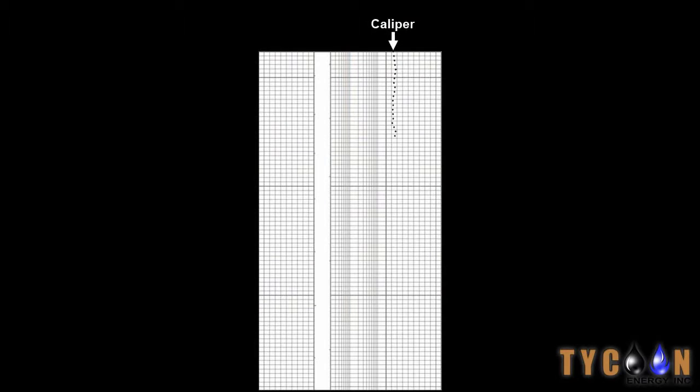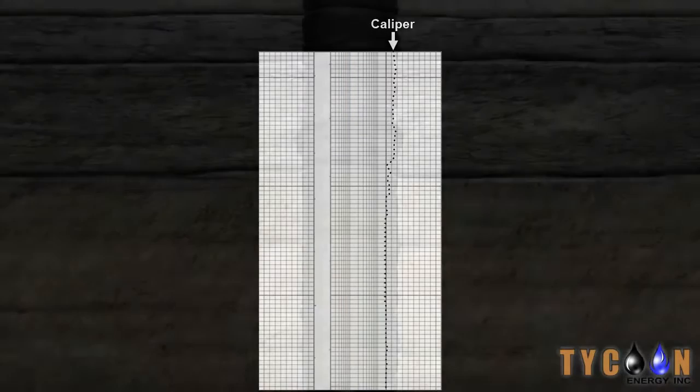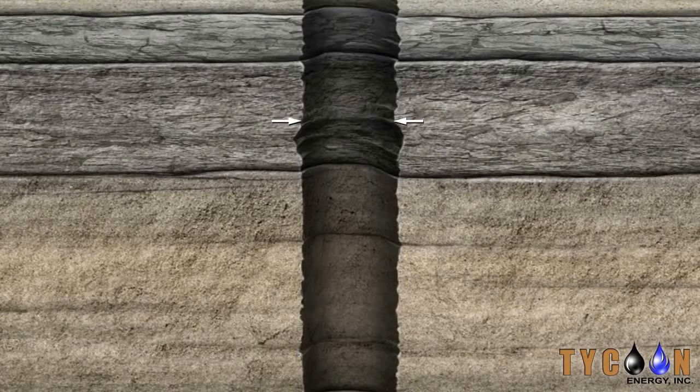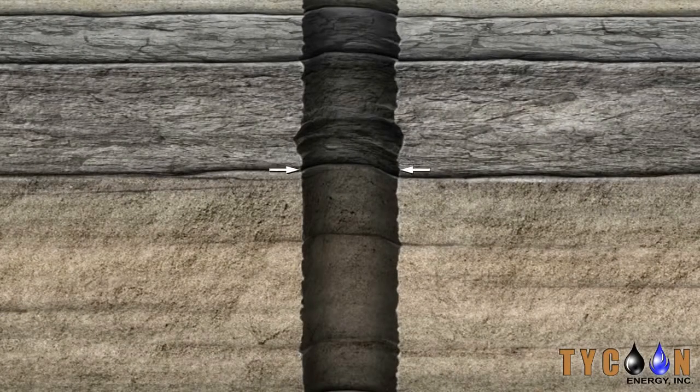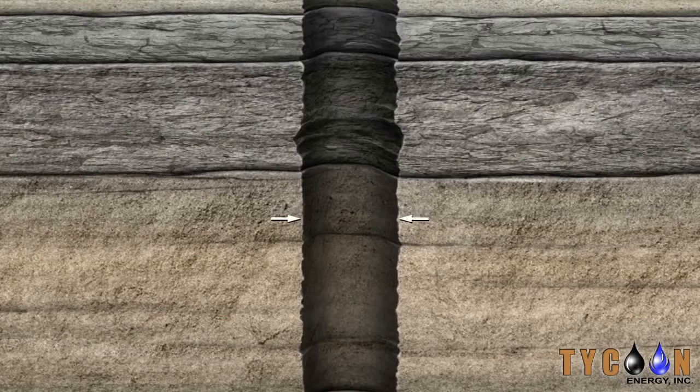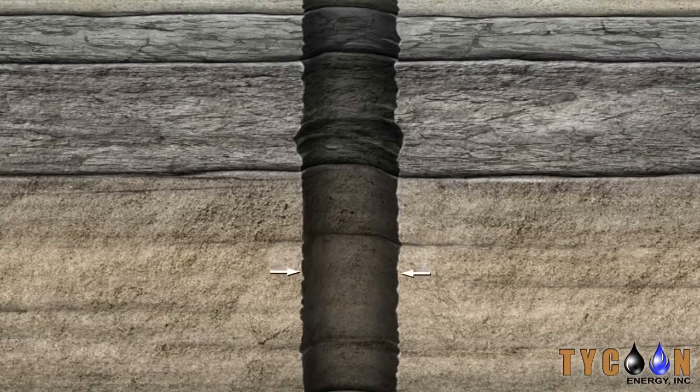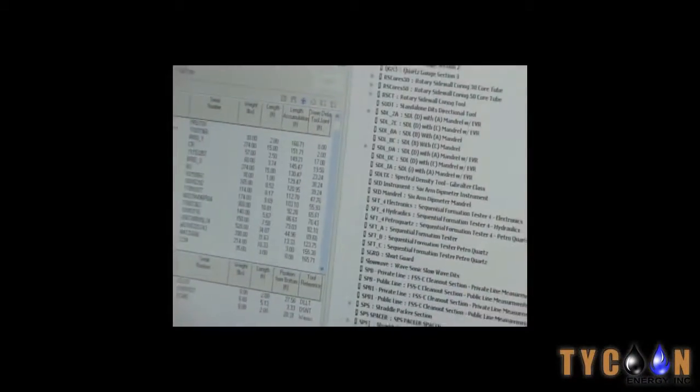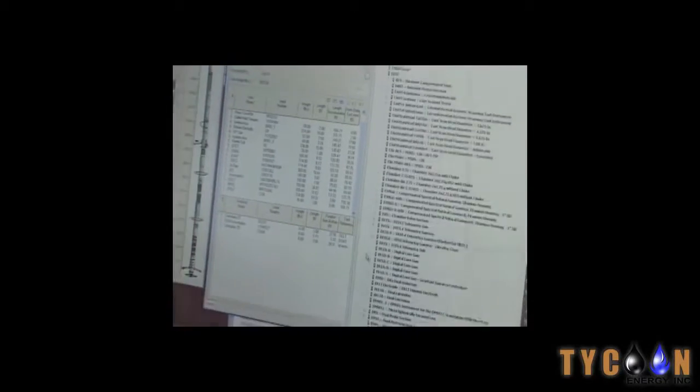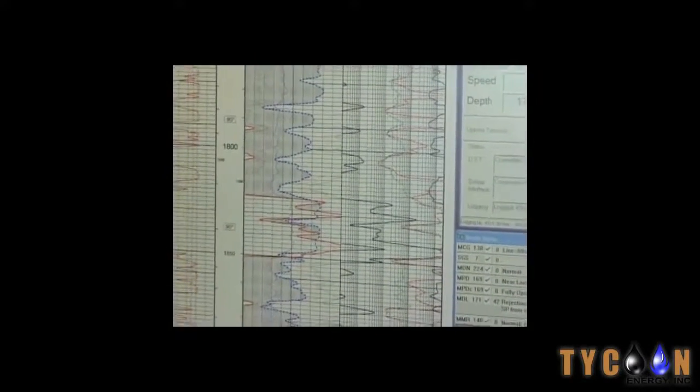Finally, on the left edge of this section, we see the reading from the caliper tool, which measures variations in the size of the wellbore. These variations can affect the accuracy of the other tools on the probe. So based on this measurement, the computer recalibrates the readings from the other tools as necessary.